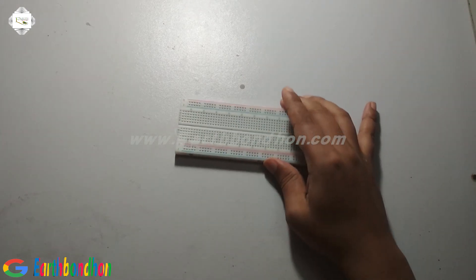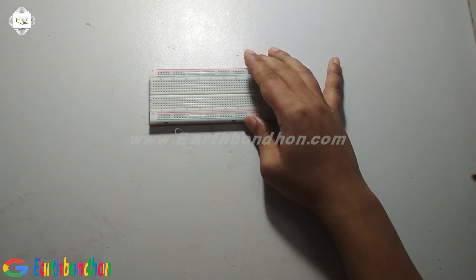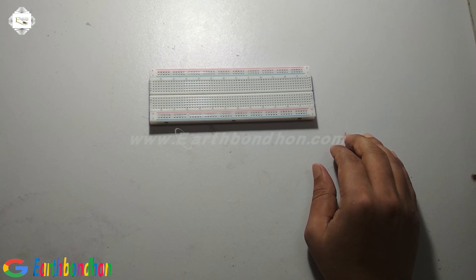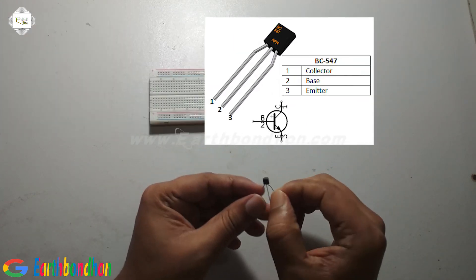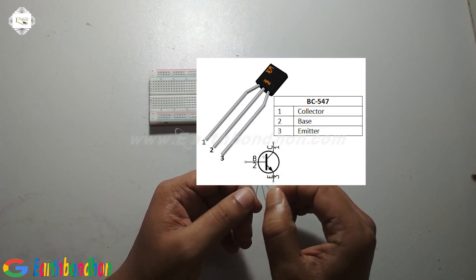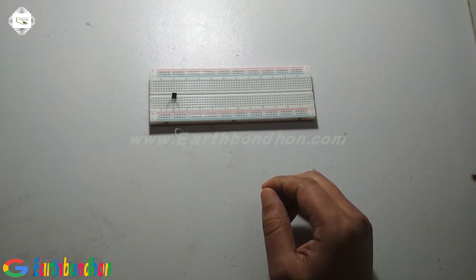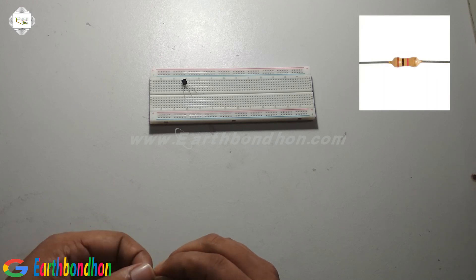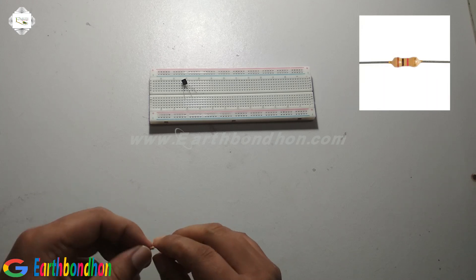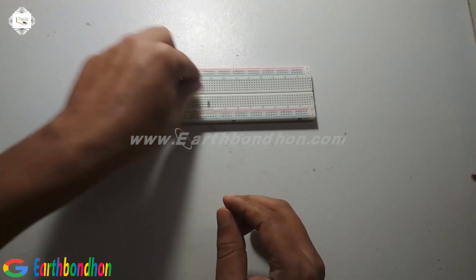The project first needs a project board, and this is the transistor BC547, 1K resistor, and LED.